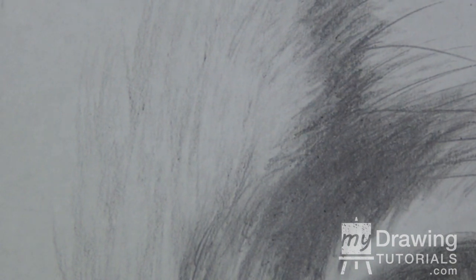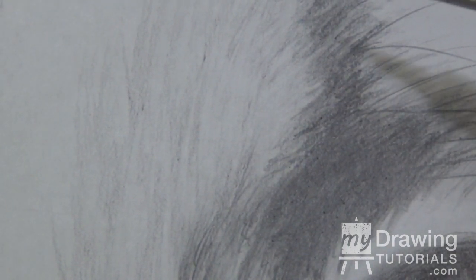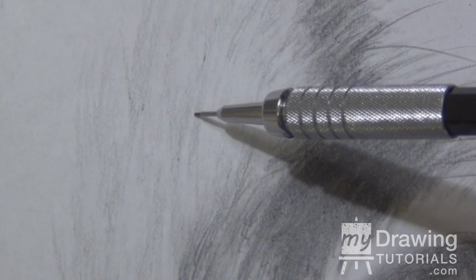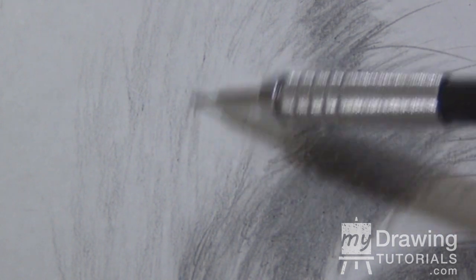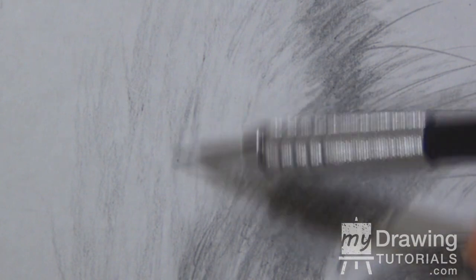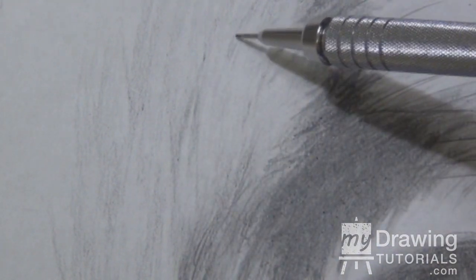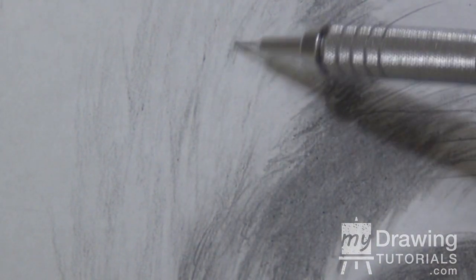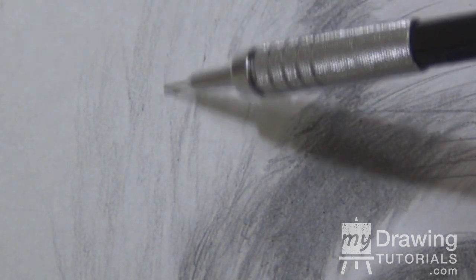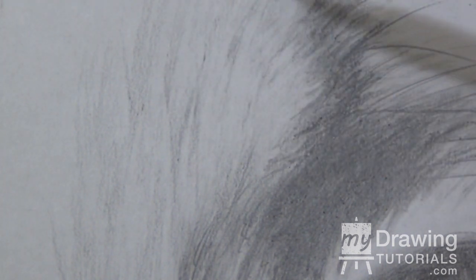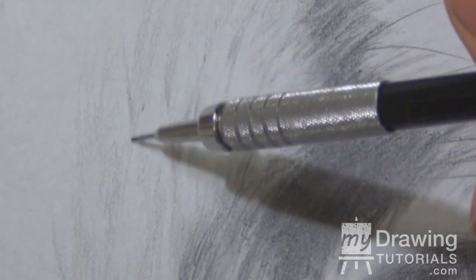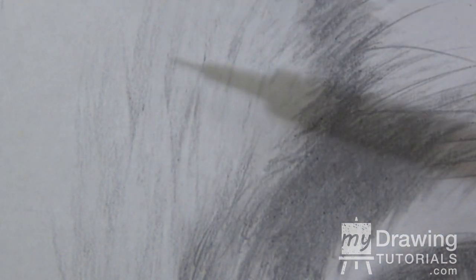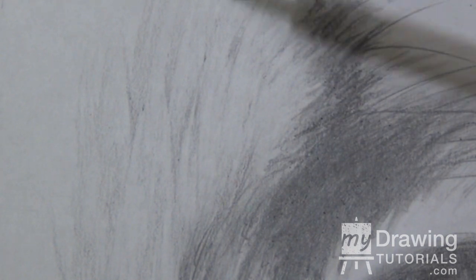And then once we have the highlights picked out, I'm going to take my mechanical pencil and go in there and again accent this highlighted area. And I want to do it sparingly, don't overcrowd the fur with highlights everywhere.